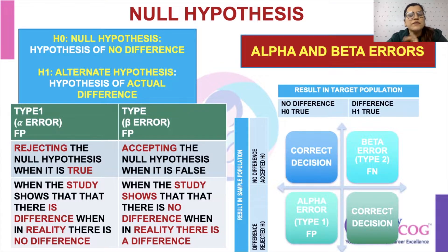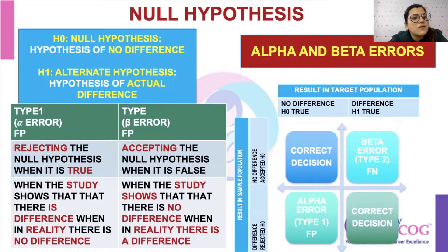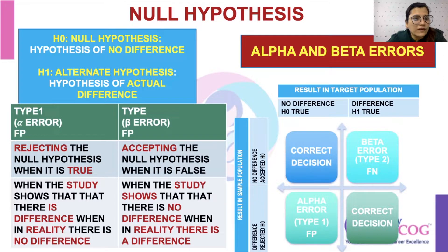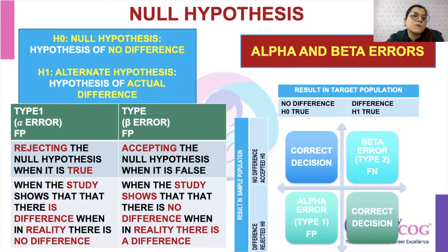The first concept I would like to discuss is the null hypothesis. There are two types of hypothesis: null hypothesis and alternate hypothesis. Null hypothesis is the hypothesis of no difference. For example, if you are doing a study showing the efficacy of one drug, your null hypothesis will be that there is no difference between the two drugs being compared.